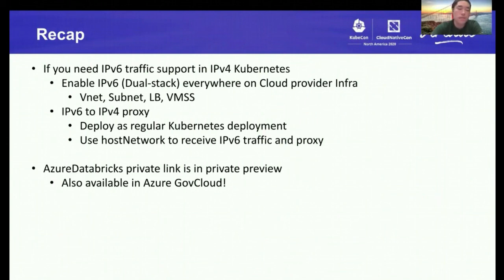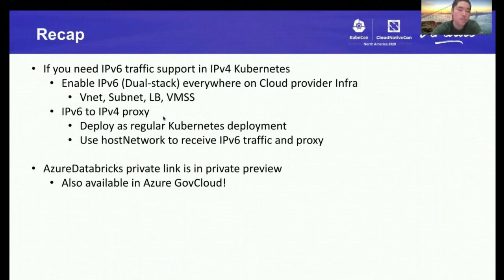To recap, this is not necessarily only about integrating with Azure PrivateLink. If you need IPv6 traffic support in an IPv4-only Kubernetes setup, you can use this approach: enable dual stack with IPv6 everywhere on the cloud provider infrastructure level, then set up a v6-to-v4 proxy deployed as a regular Kubernetes deployment using host networking. You can then receive IPv6 traffic, proxy it to IPv4, and route it all the way to your Kubernetes services. This is a good way to support IPv6 traffic with IPv4 Kubernetes if you don't want to use the dual-stack feature yet.